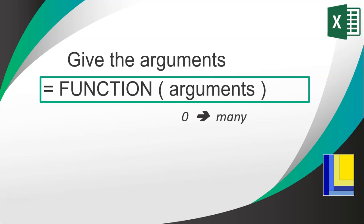When you have many arguments, we separate them with commas so that it knows this is the first argument, this is the second, and so on.